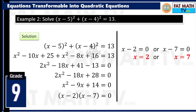To check, substitute into the original equation. If x is 2: 2 minus 5 is negative 3 squared, that is 9. And 2 minus 4 is negative 2 squared, that is 4. So 9 plus 4 is indeed 13. How about 7? 7 minus 5 is 2 squared, that is 4. Plus 7 minus 4 is 3 squared, that is 9. That is also 13. So the solution set includes 2 and 7.